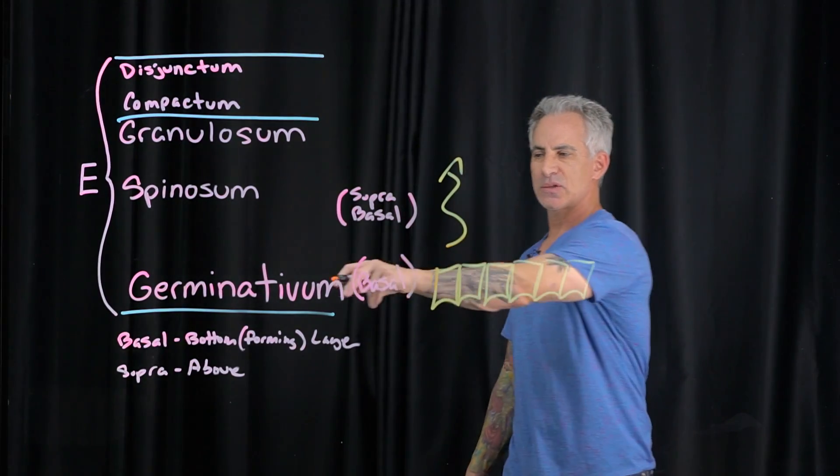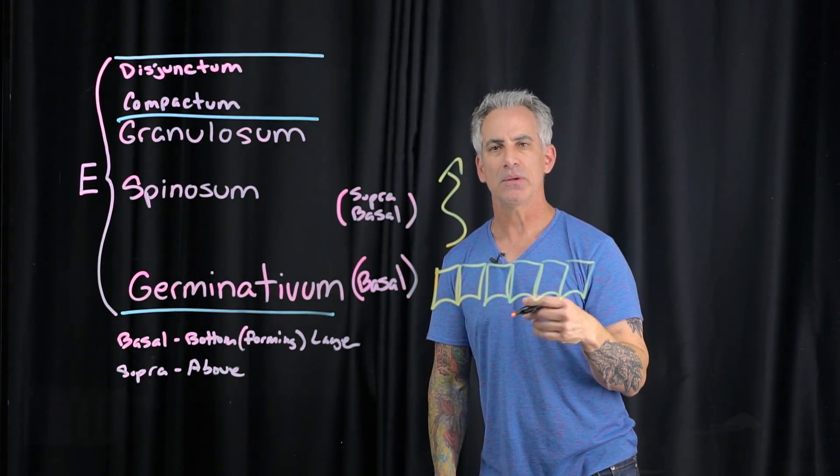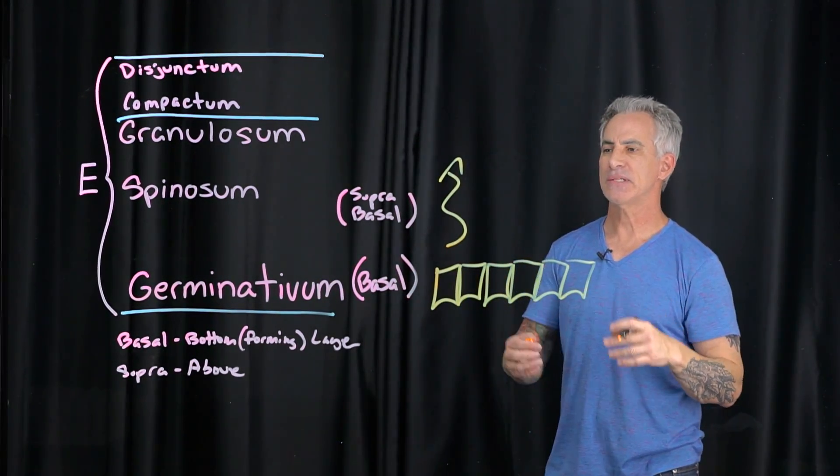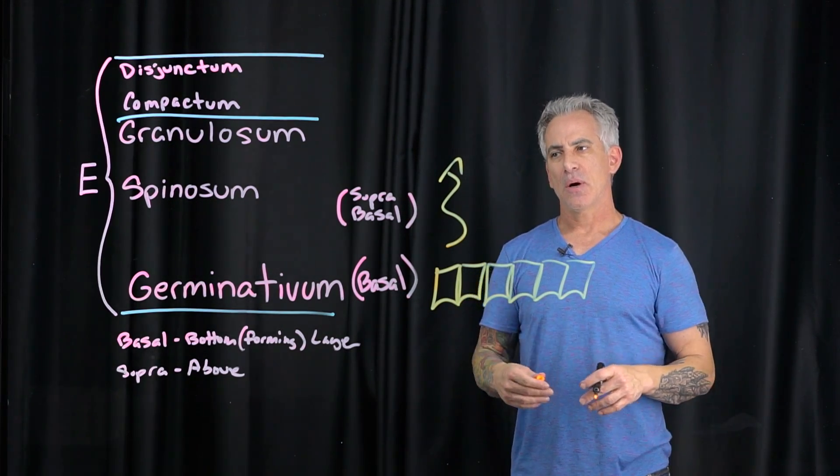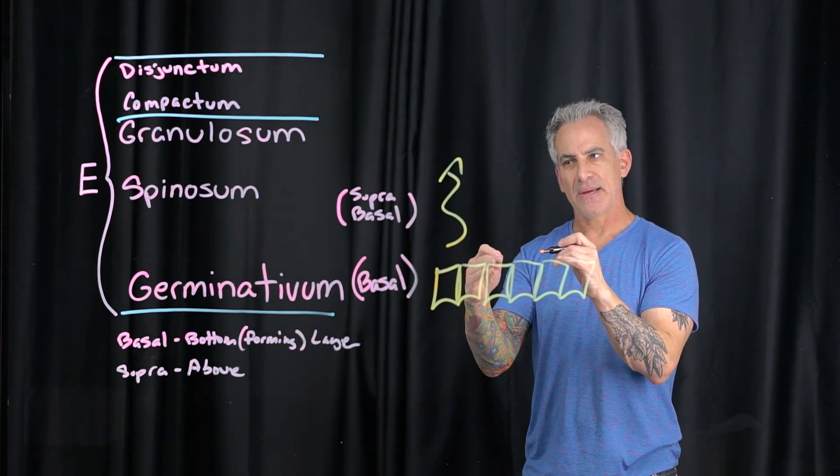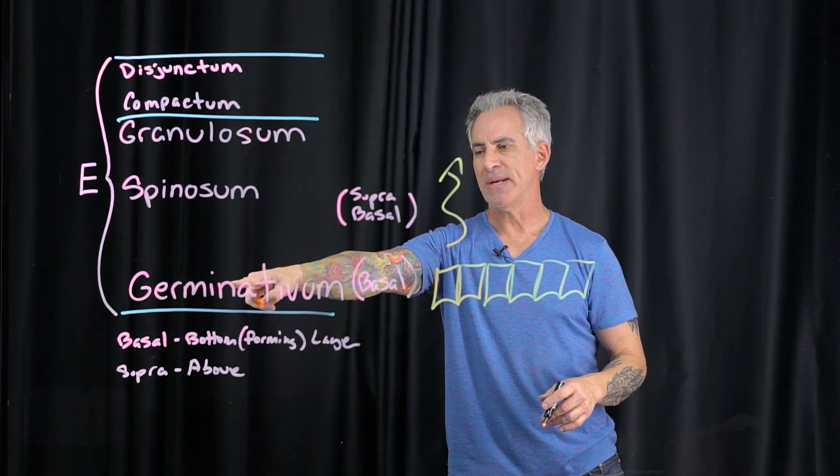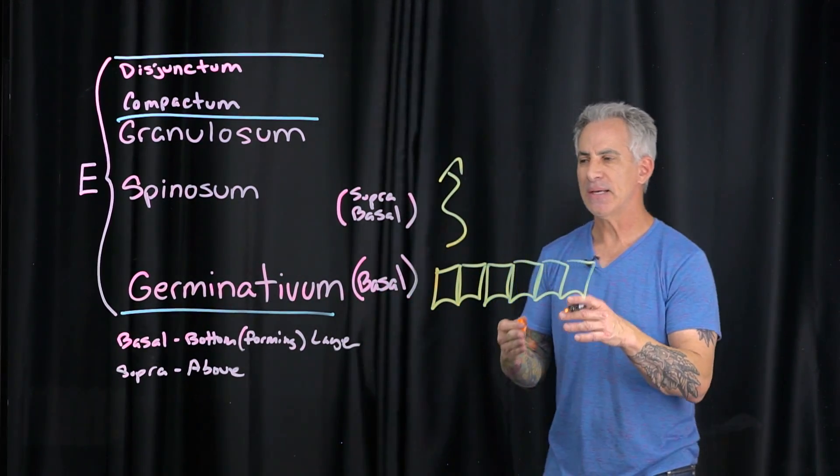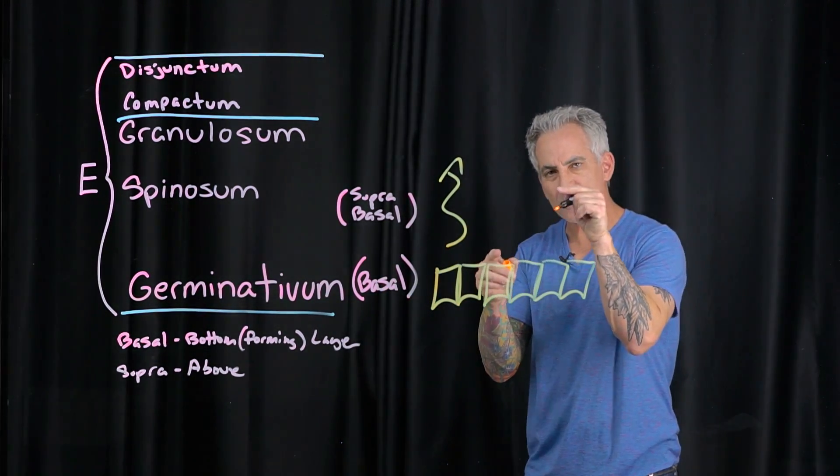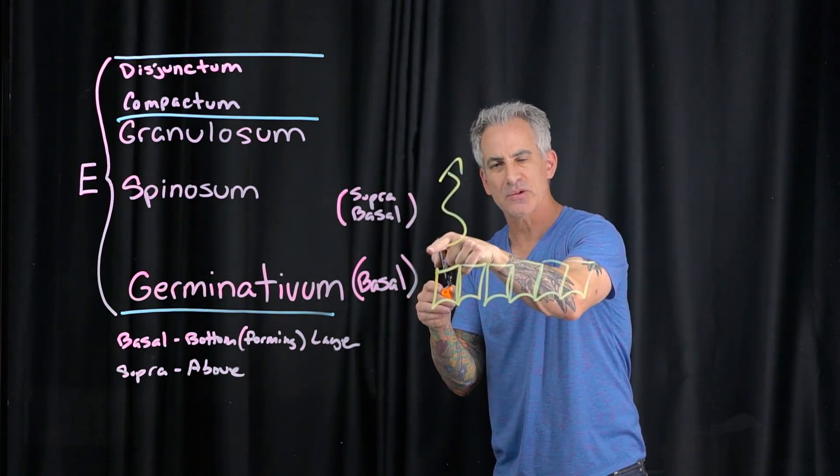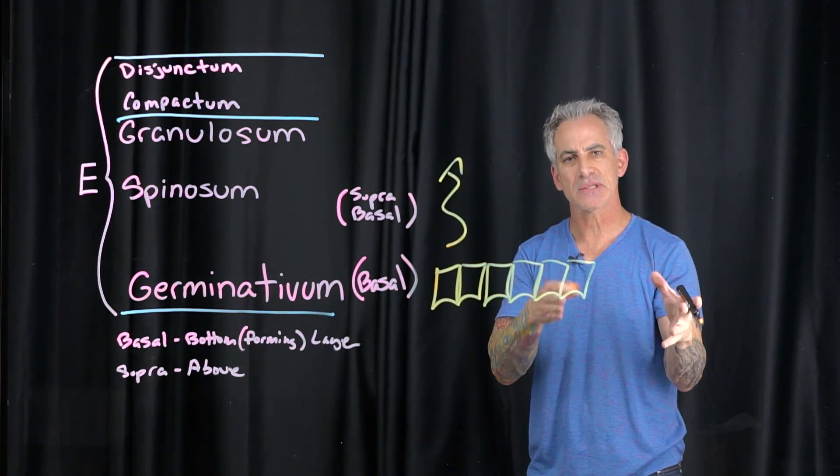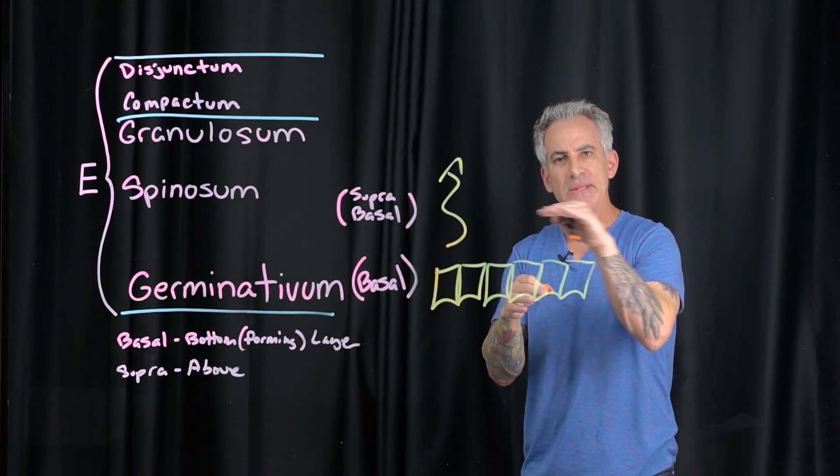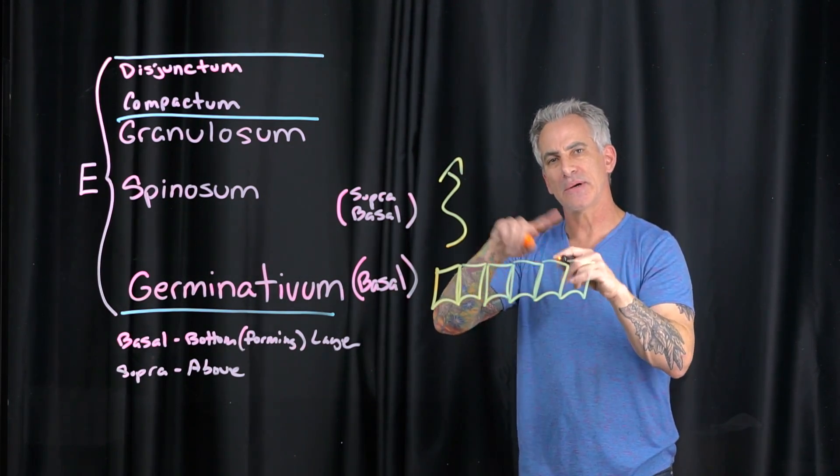So basically this is one layer, and sometimes what you'll hear is basal cell. The reason that is, and you're not saying germinativum cells, is because it's just more descriptive when you say basal. So if you see the word basal cell, you know that's at the bottom of the epidermis and you know now what their function is.